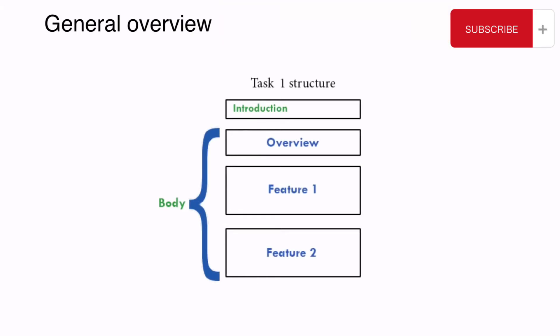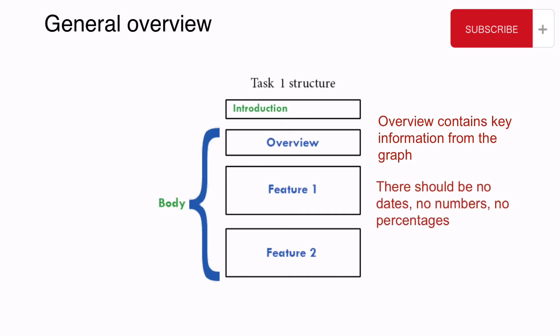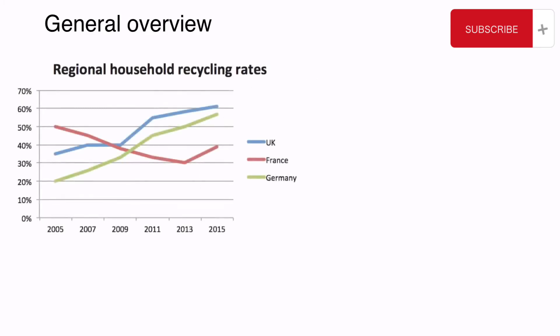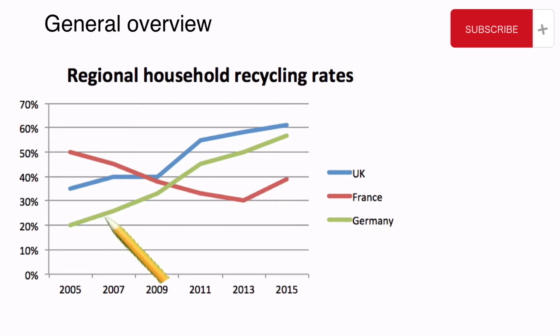Let's move on to the next paragraph. After you have written the introduction, it's time to write an overview. An overview is a paragraph that contains all the key information from the graph. When giving an overview, you should not state any specific details — no dates, no numbers, no percentages. Just general trends. Let's take a look at the key features on our graph. It's easy to note that the UK and Germany's rates went up, while France's rates went down. Those are our two key features.